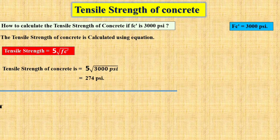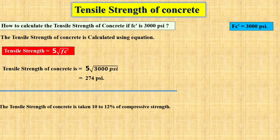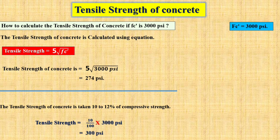We can also use another method to find the tensile strength of the concrete. The tensile strength is taken as 10 to 12% of the compressive strength. So in this case, the tensile strength equals 10% of 3000 psi, which gives 300 psi. The main approach is either to use the formula ft = 500√fc or to take 10%, 11%, or 12% of the compressive strength.